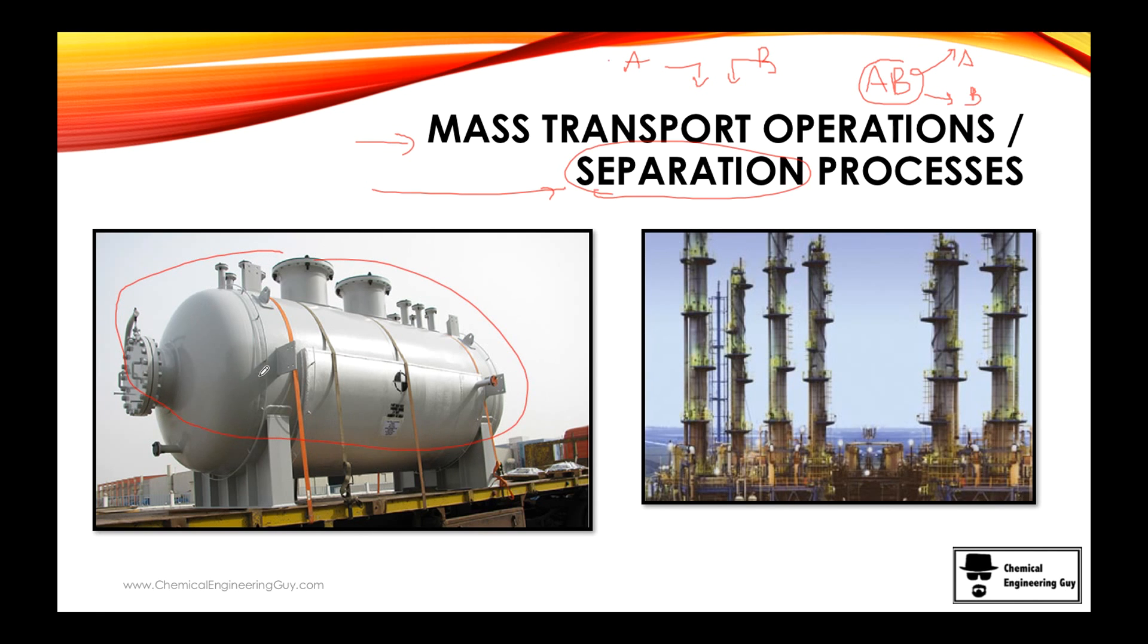This is a flash, a flashing unit. You just insert the feed and you will have an outlet which is vapor and another outlet which is the liquid with different percent compositions, which is what we want.